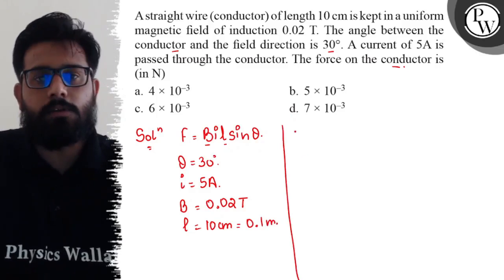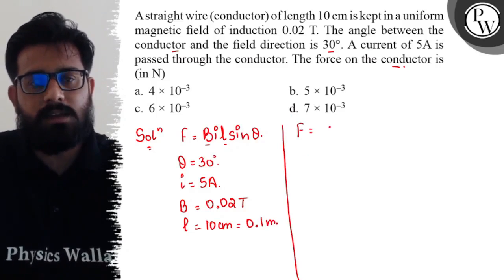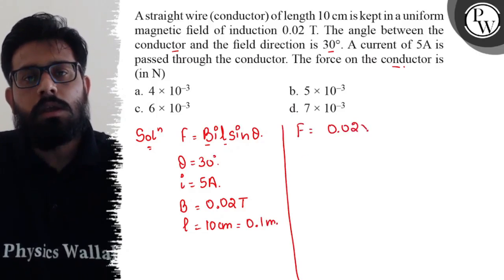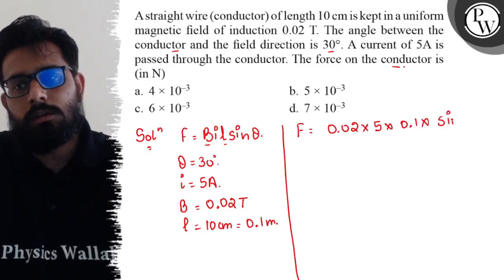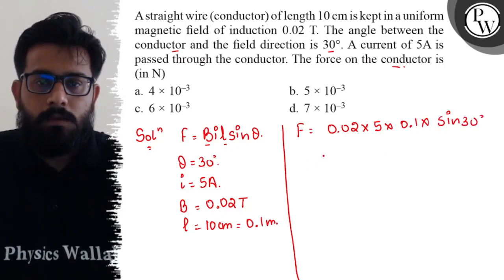So now just put the values and you will get the value of F. Put the values: 0.02, current is 5, length is 0.1, into sine 30 degree. When you solve this part you will get the value.